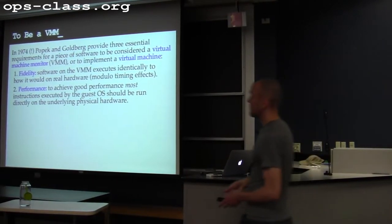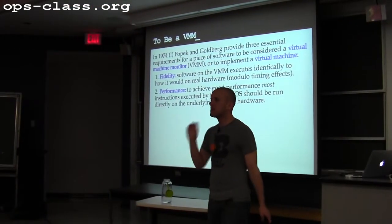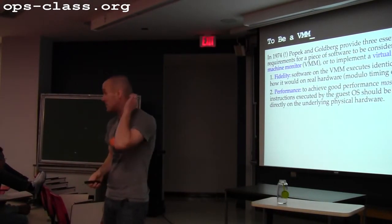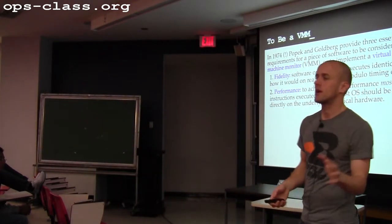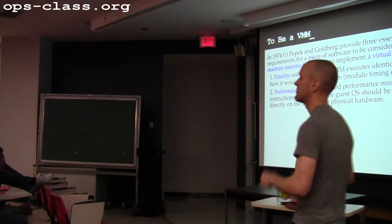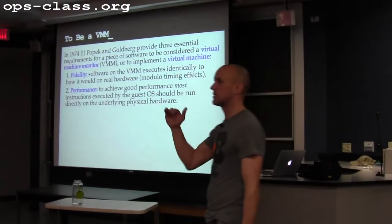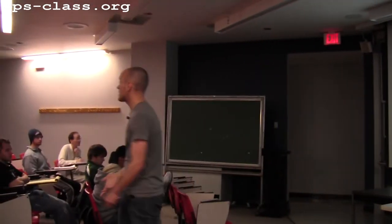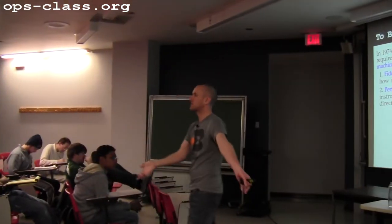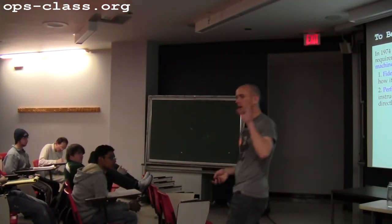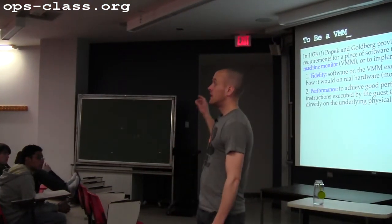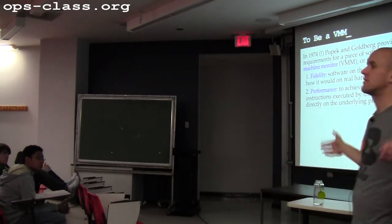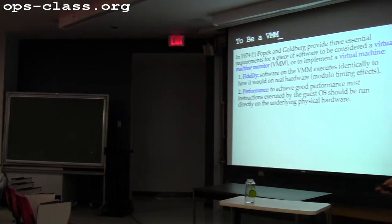The way we achieve performance in a virtualized environment is that we run as many instructions as we can on the real hardware. What we'll talk about today and maybe on Friday is figuring out which instructions we can't run on real hardware and what to do about those instructions. Most instructions — if you look at the instruction stream generated by something running in a virtual machine — are safe to execute directly on the hardware. All they do is modify registers. But there are instructions that the guest operating system will want to use that create problems — they modify the global state of the machine in a way that the virtual machine cannot do.